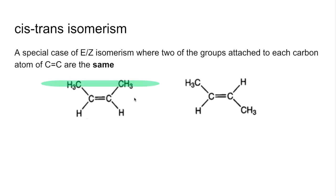In the one on the left, the identical groups are on the same side of the carbon-carbon double bond, whereas the one on the right they're on opposite sides of the carbon-carbon double bond, or you could think of them as being diagonally opposite each other.